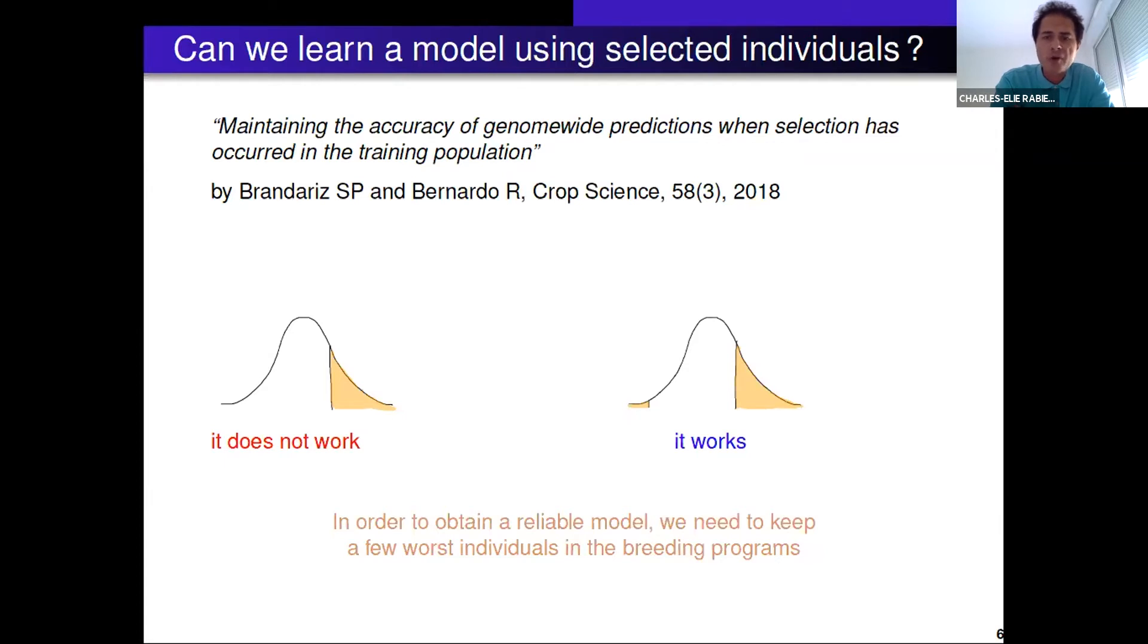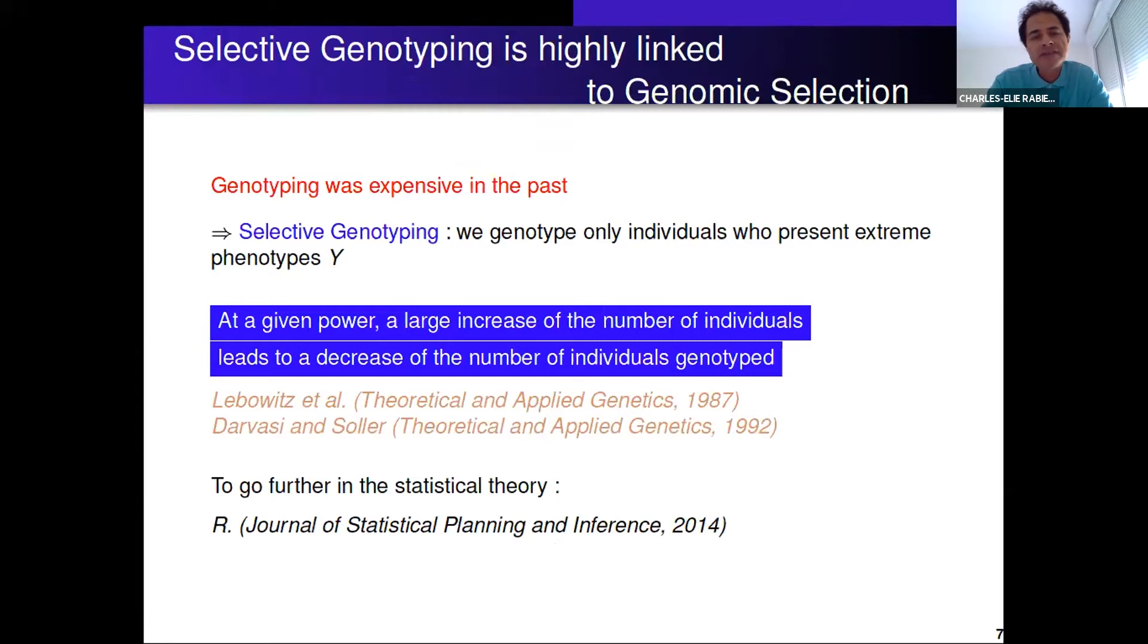Is there a way to handle this more properly? This topic of genomic selection is highly linked to an old topic which is selective genotyping. Genotyping was very expensive in the past. Selective genotyping consists in genotyping only the extreme phenotypes. It was suggested by Leibovitz et al. in '87. They observed that most of the information on the gene or QTL - QTL is locus responsible for the variation of quantitative trait - most of the information is contained in the extreme individuals. Then Darvasi and Soller and Darvstein formalized this concept with some statistical theory on this.